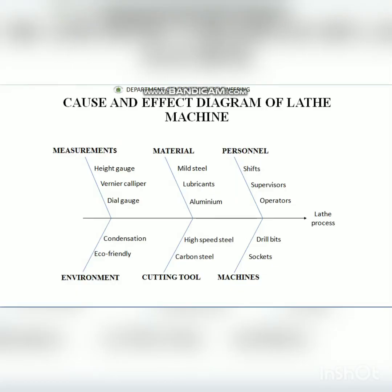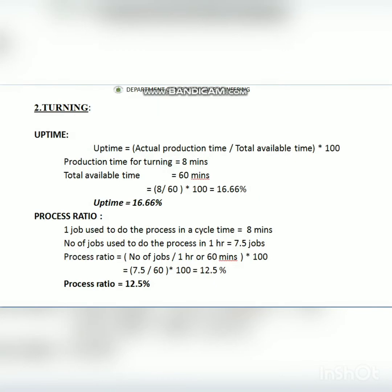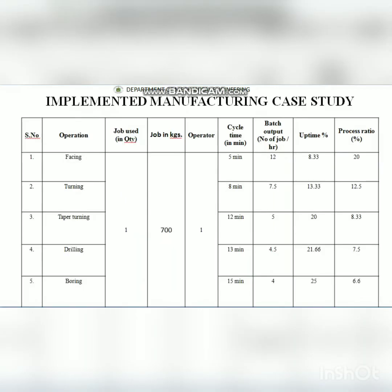Using the cause-and-effect diagram, we identify in which operation — facing, taper turning, boring, or others — the defects are occurring. We then fine-tune that process by reducing the uptime and increasing the process ratio. This improvement is applied once again to individual operations: facing, turning, taper turning, drilling, and boring. We then recalculate uptime and process ratio across all five processes.